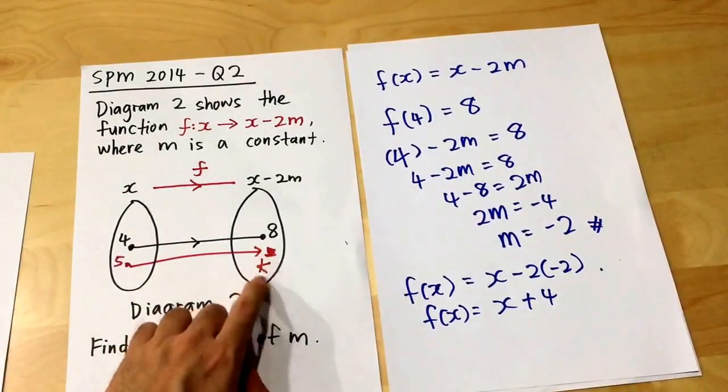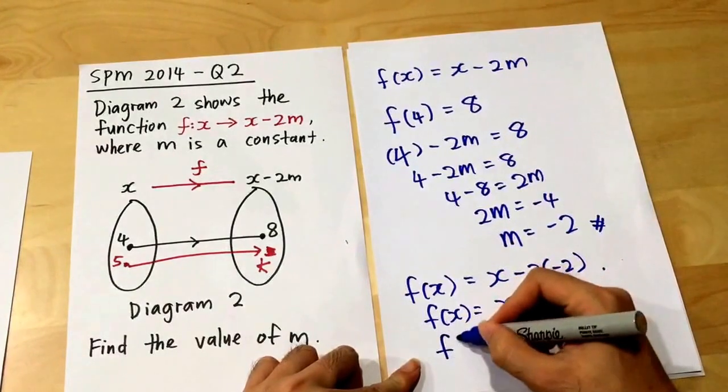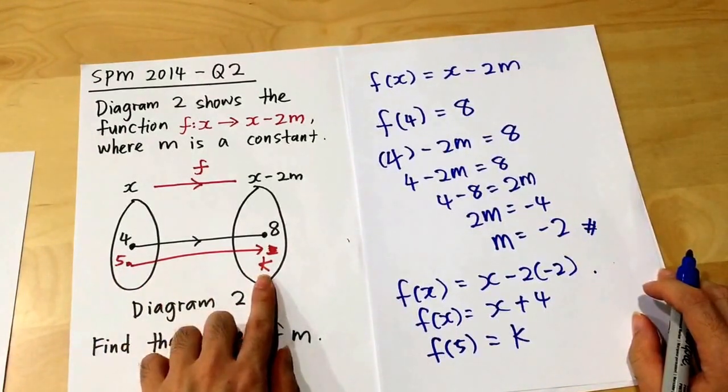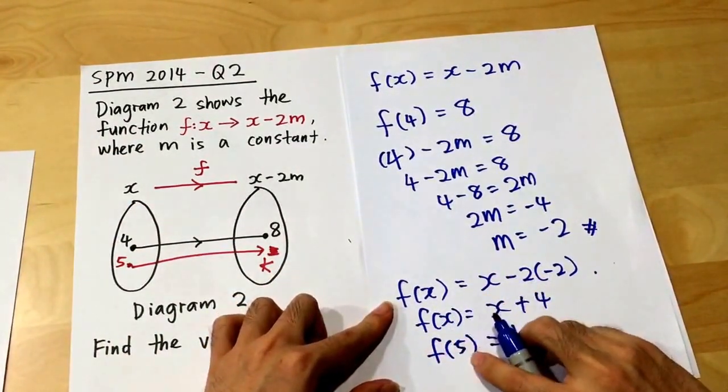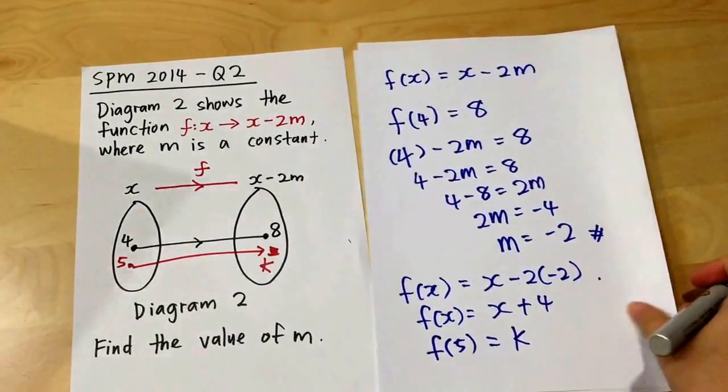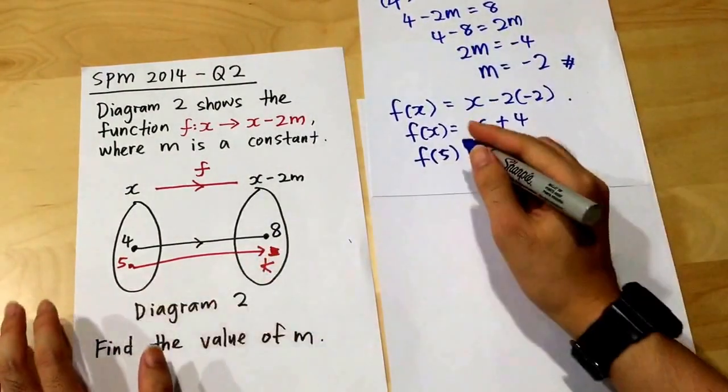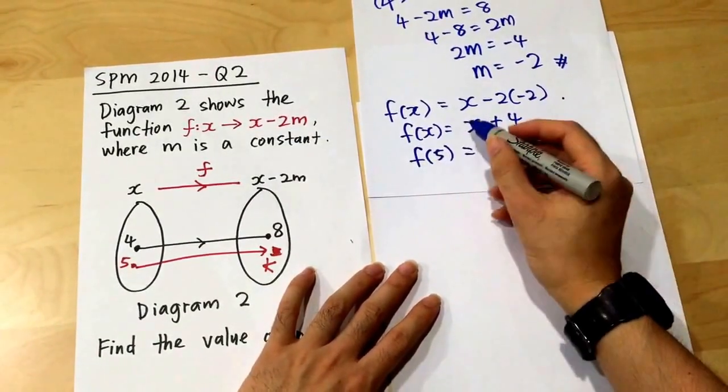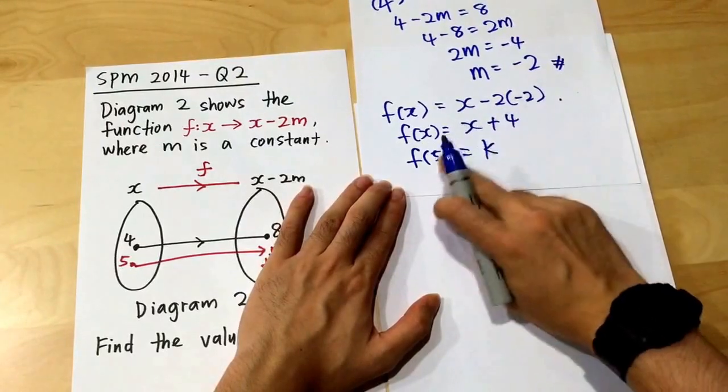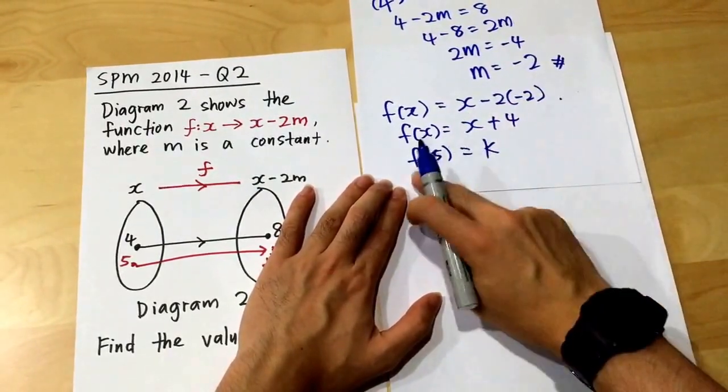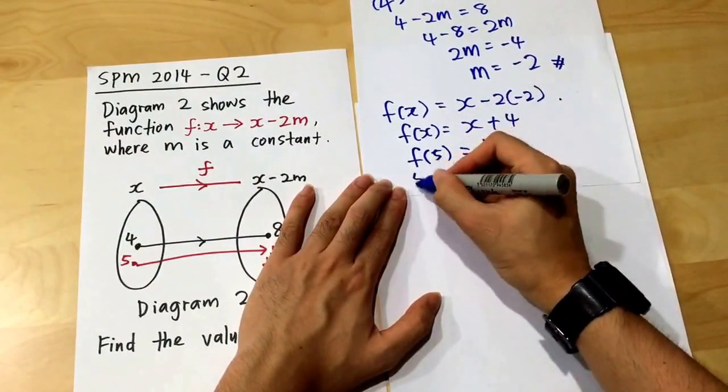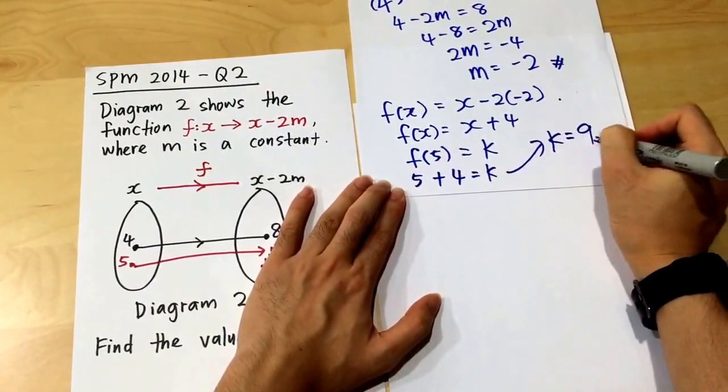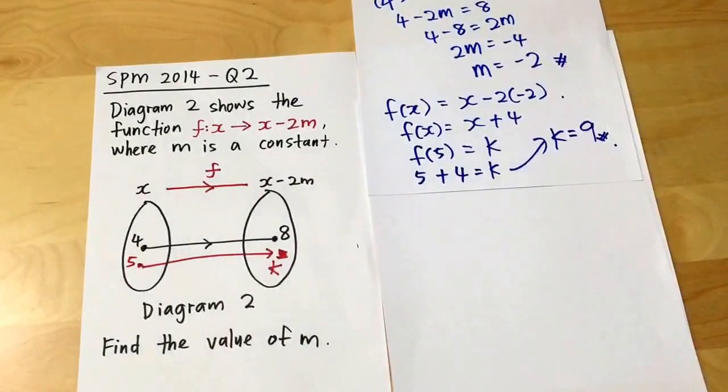When my x is 5, what is the value for my image? I will write f(5) equals k. The k itself is the whole function with 5. You have to understand the idea. I do the substitution. f(5) means my x will become 5. My fx is x plus 4, so f(5) will be 5 plus 4 equals k. My k equals 9. I hope you get the idea how to solve questions like this.